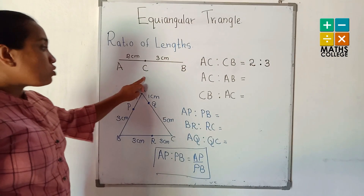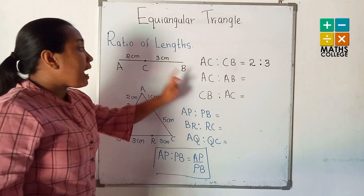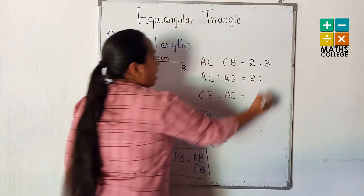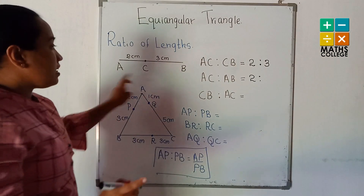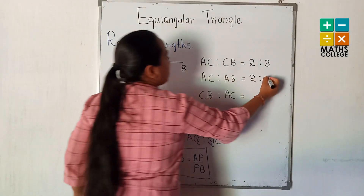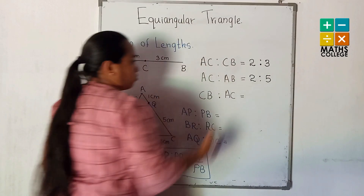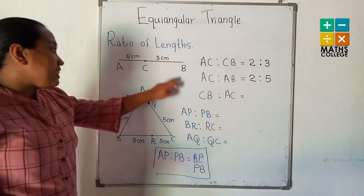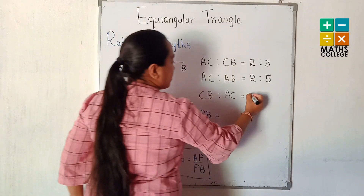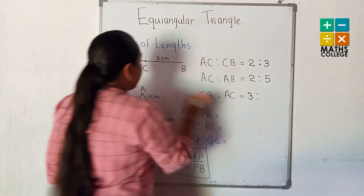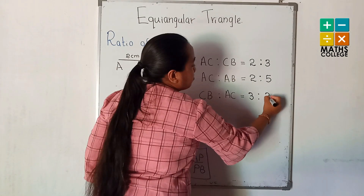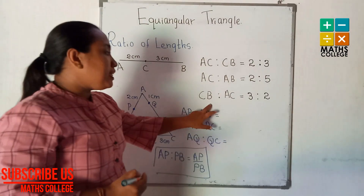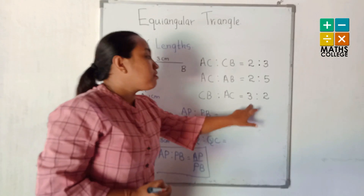Next, AC to AB: the length of AC is 2 cm and the length of AB is 5 cm, so the ratio is 2 to 5. Next, CB to AC: CB is 3 cm and AC is 2 cm, so the ratio CB to AC is 3 to 2.